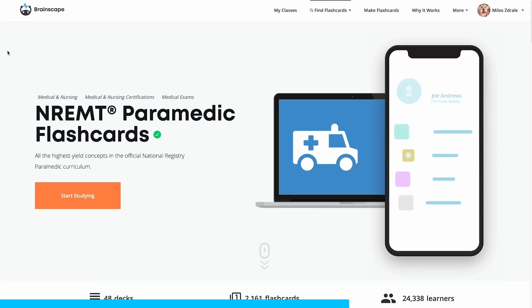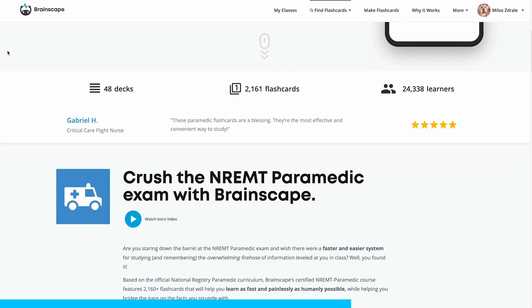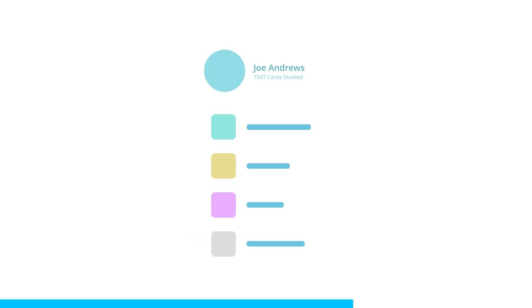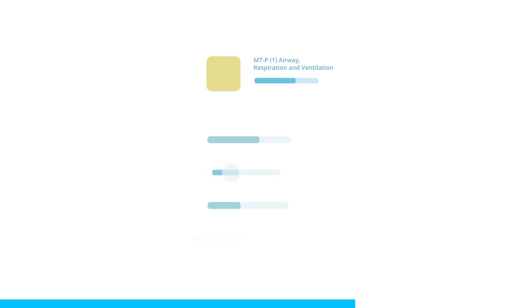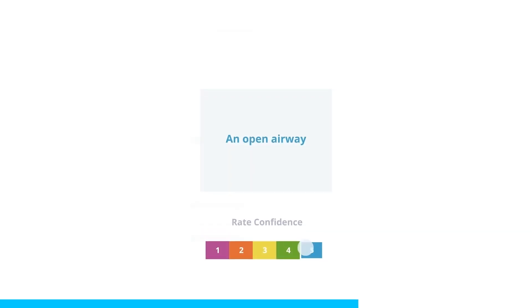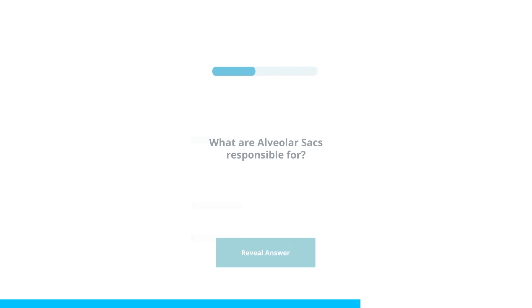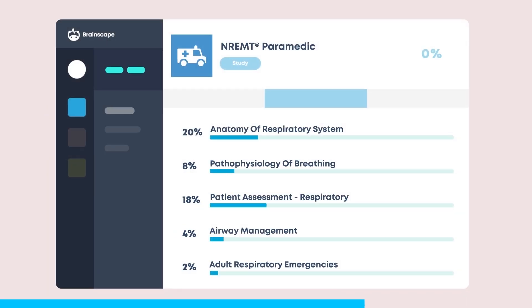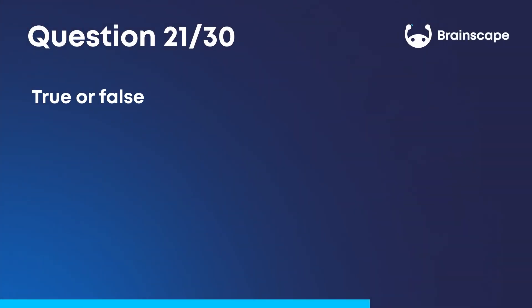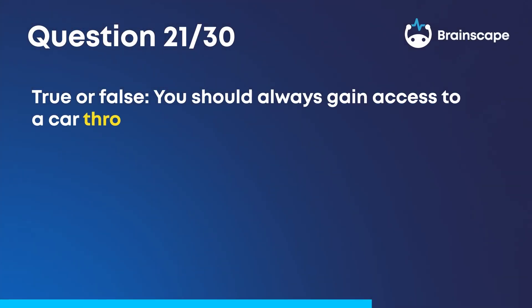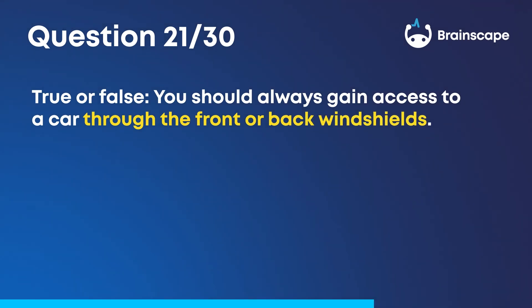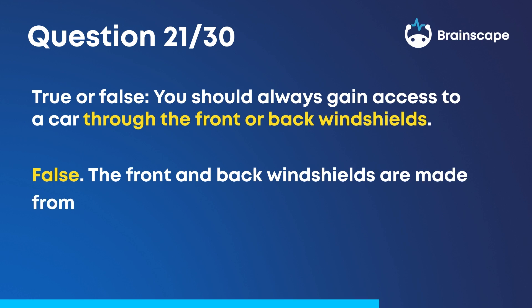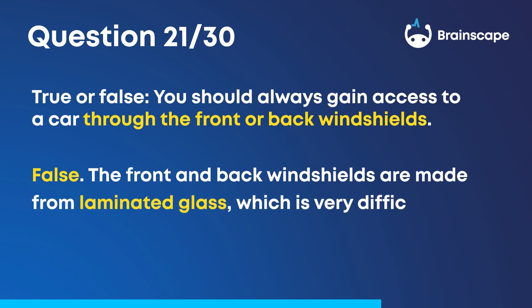If you're loving the challenge, you'll find hundreds more questions with illustrations in Brainscape's adaptive mobile flashcards for the NREMT paramedic exam. Question 21. True or false: you should always gain access to a car through the front or back windshields. False. The front and back windshields are made from laminated glass, which is very difficult to break.